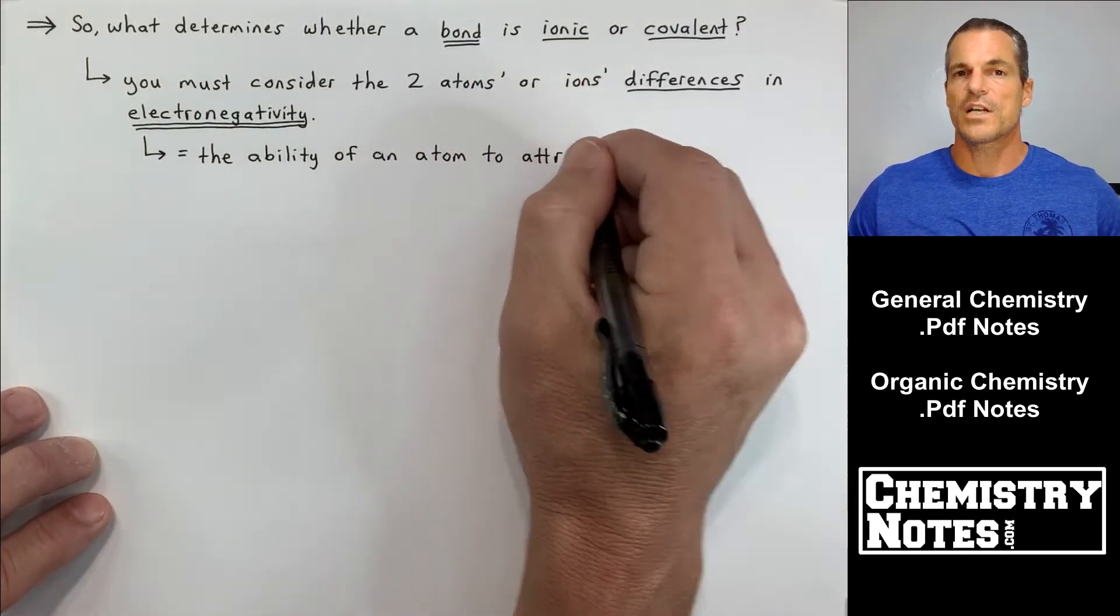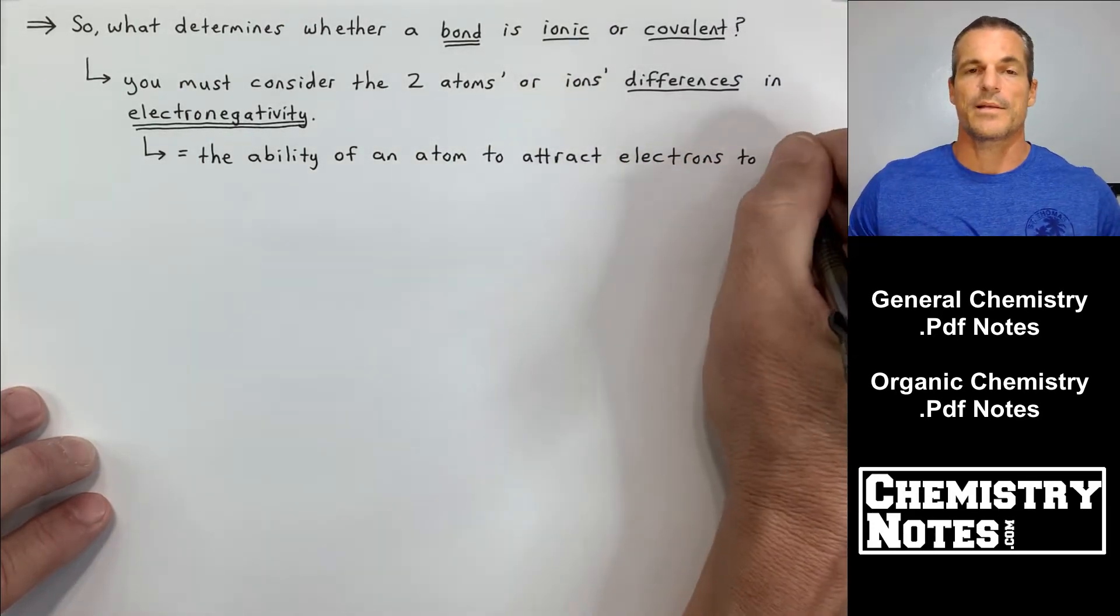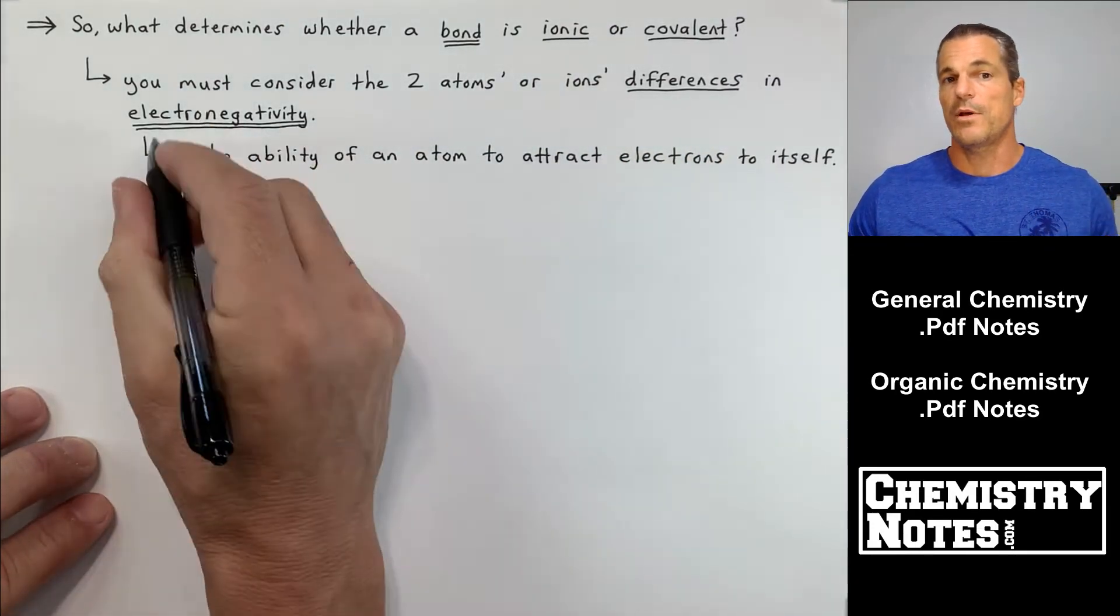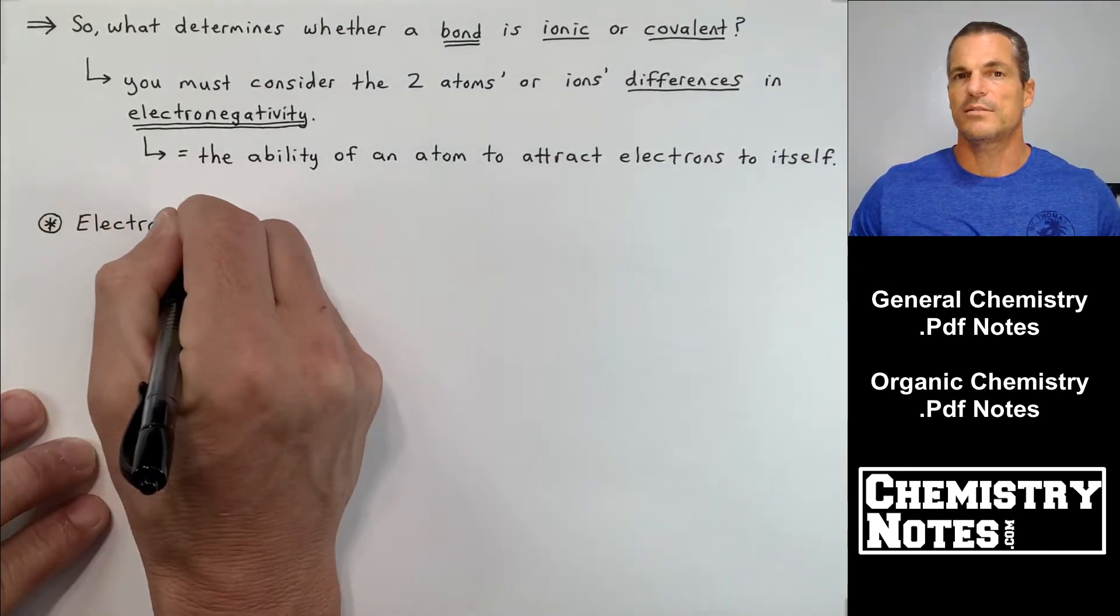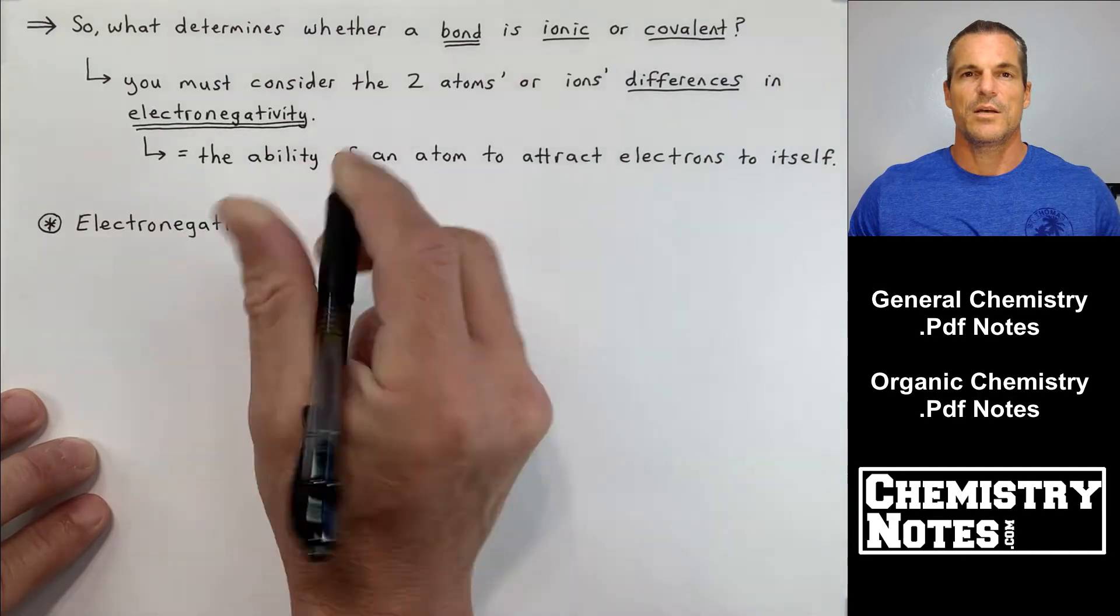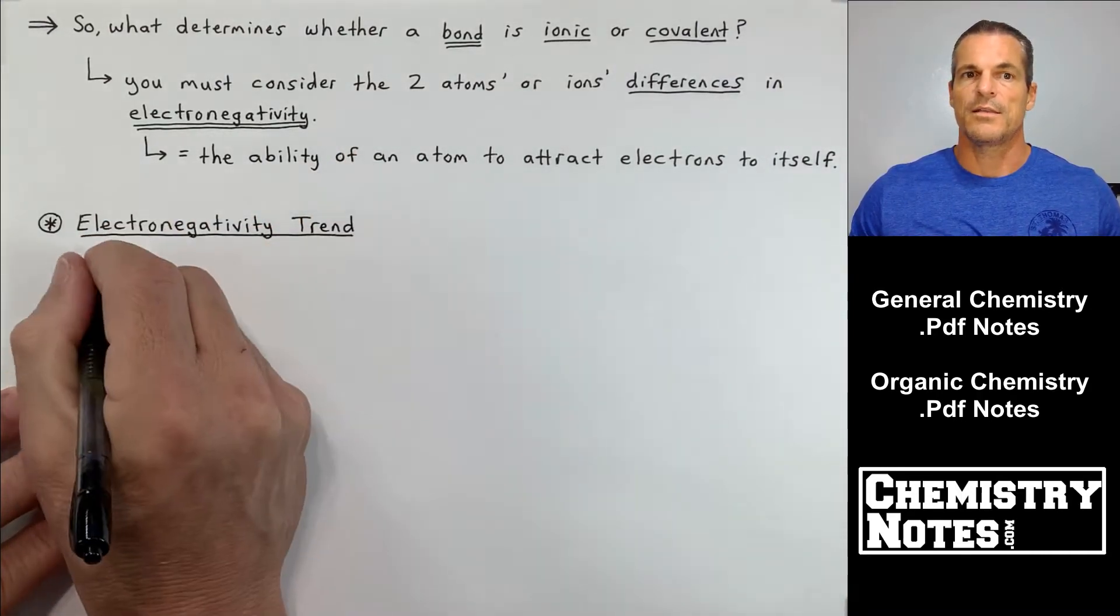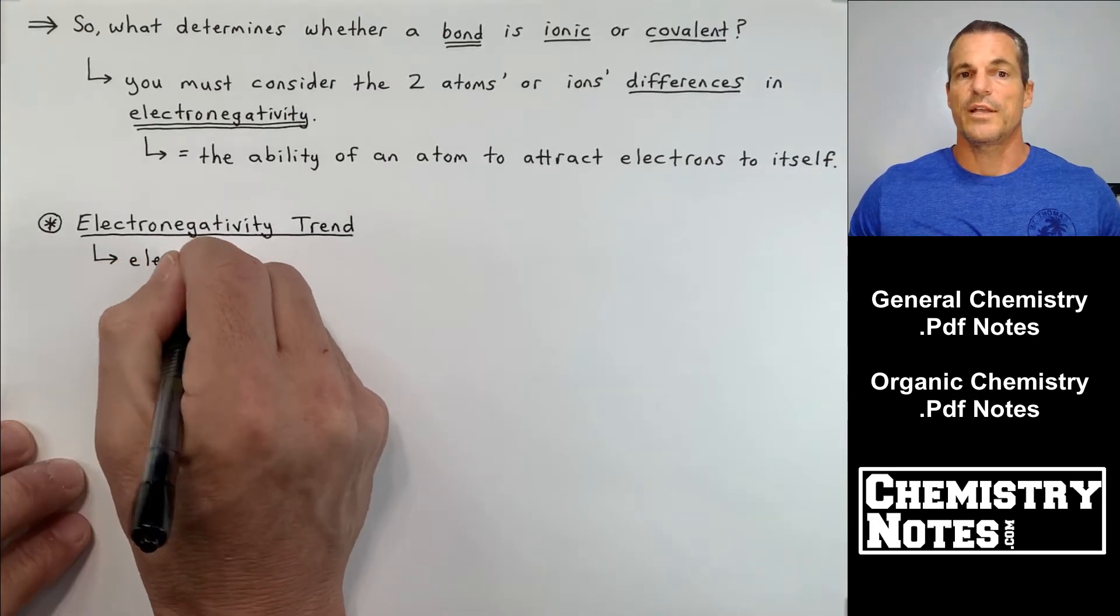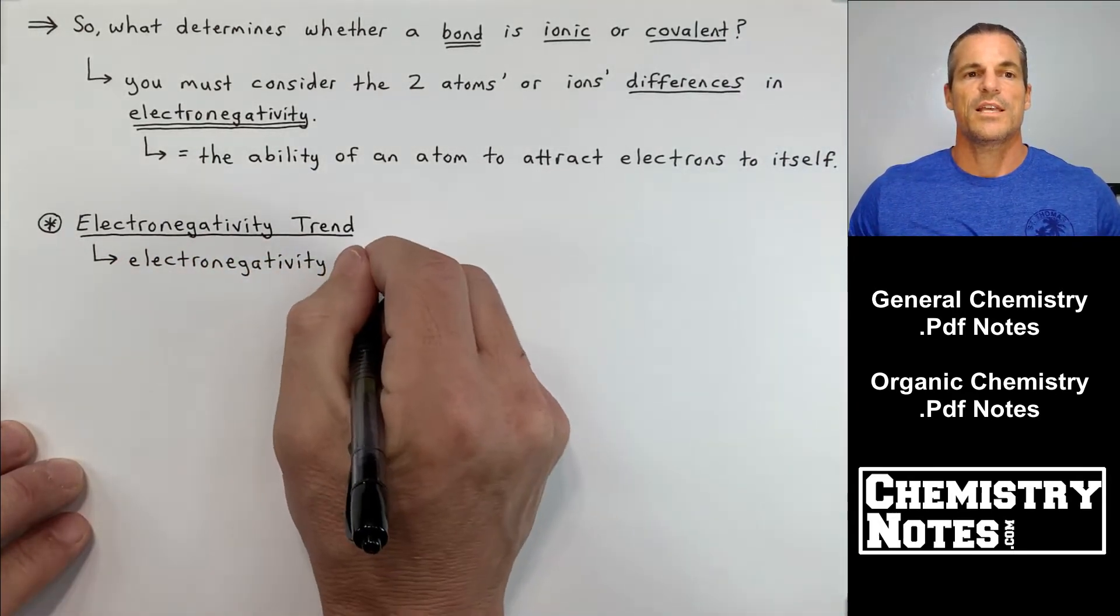So we have to first come up with a general trend of electronegativities for the periodic table. Now we've talked about three periodic trends already: atomic radius, ionization energy, and electron affinity. Well, the electronegativity trend is our fourth trend.